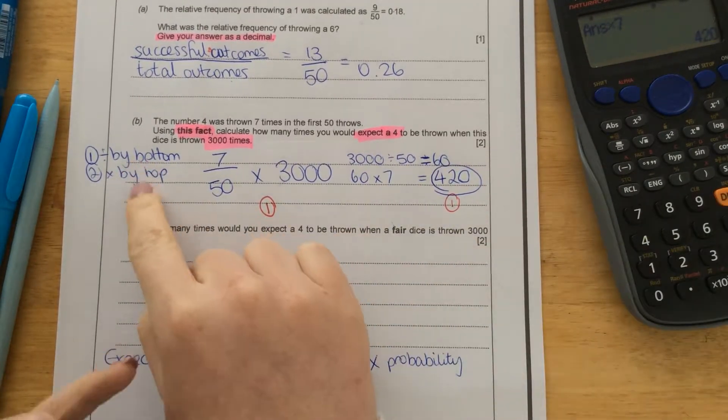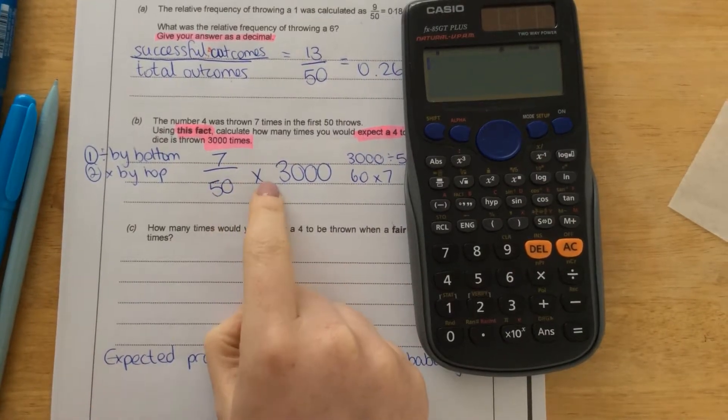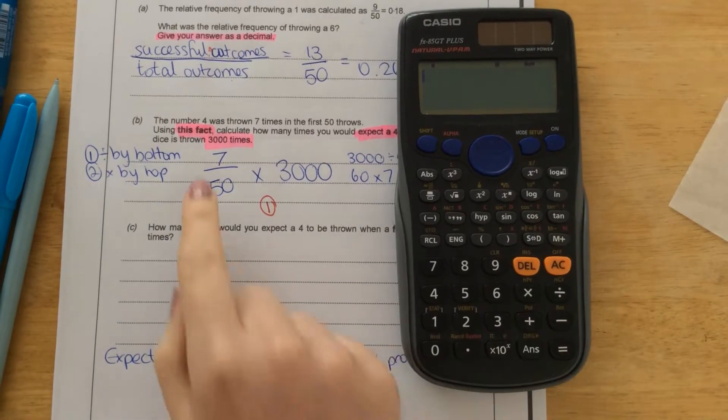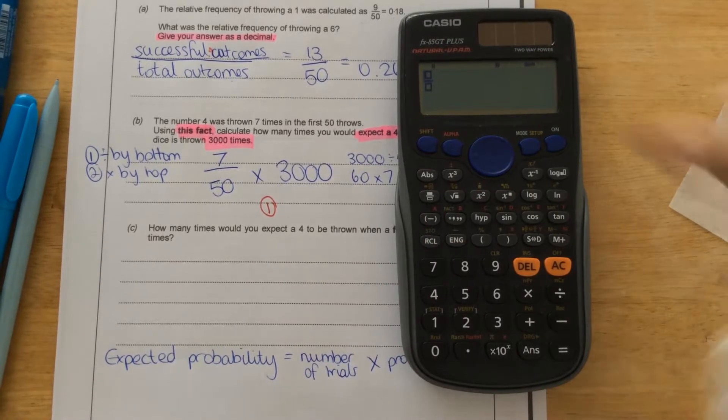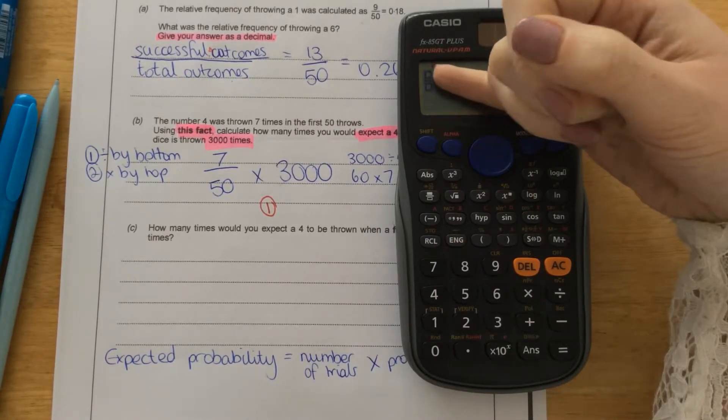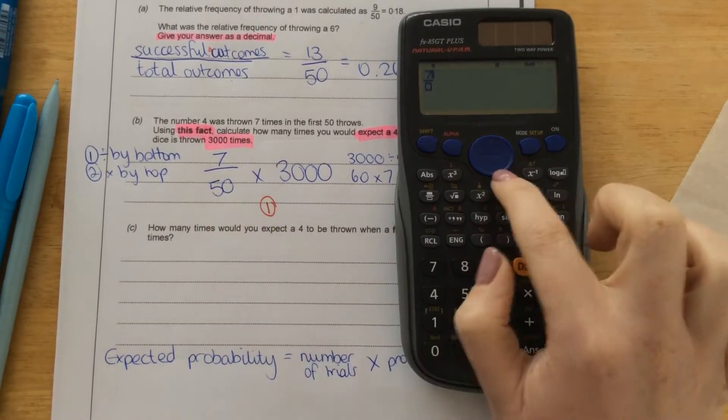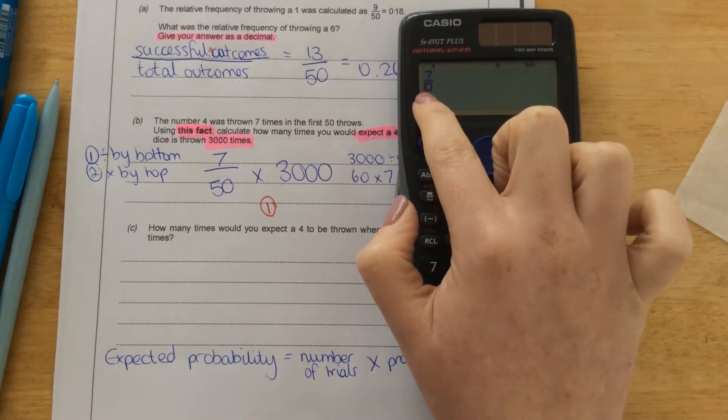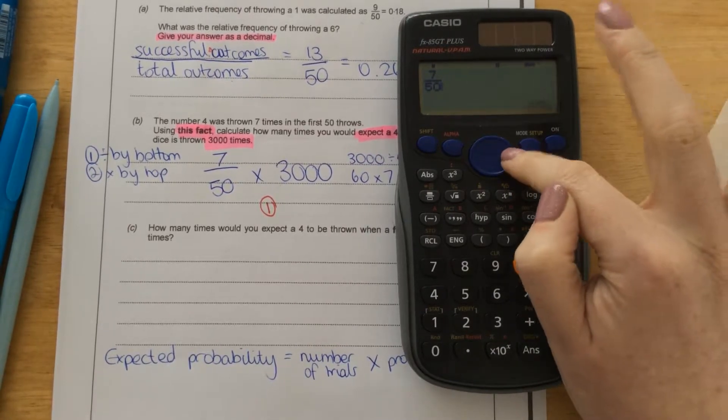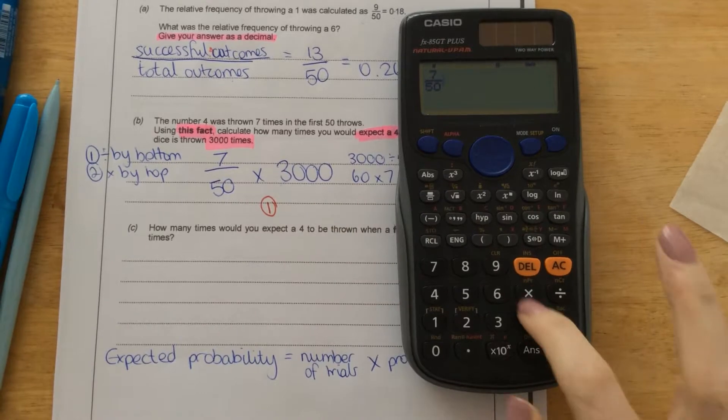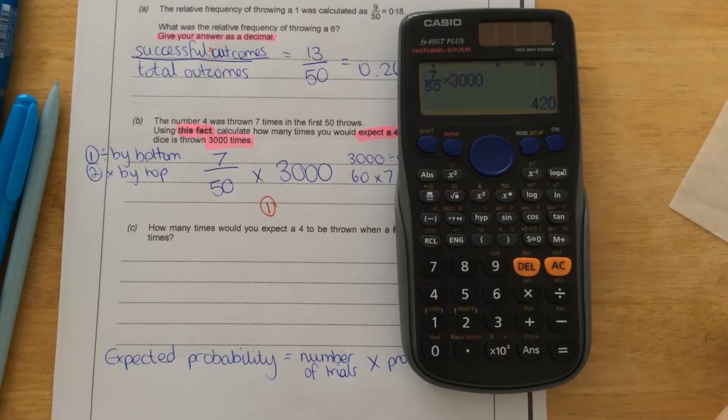Another way to do this on the calculator is, instead of using step 1 and step 2, is actually writing 7 over 50 times 3,000. So on a Casio calculator, you can write a fraction using this button here. Click on that, and then that symbol appears on your screen. So the cursor is in the top box now, meaning you can write in the numerator, the top number of your fraction. And that's 7. So to write the bottom number in, bring your cursor down. So that's in the bottom there. And then you type 50. To get out of the fraction, you need to press the arrow button. And then you're going to type times 3,000. Make sure you get the right amount of zeros. And that will give you the same answer as 420.